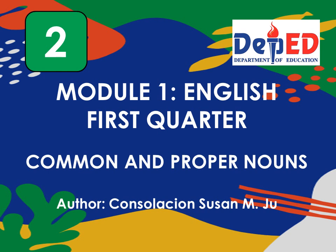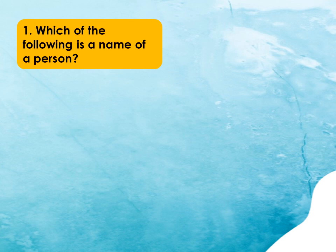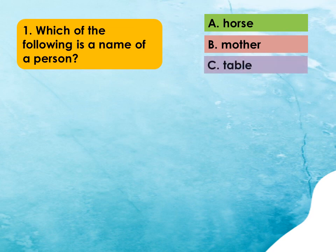Before we start, let us have a review first of what we have discussed last time. Let me ask you these questions. Number 1: Which of the following is the name of a person? A. Horse, B. Mother, C. Table. That's correct! It's B. Mother.